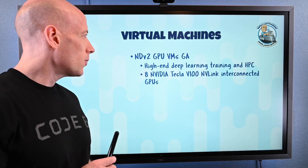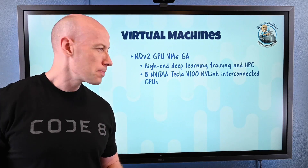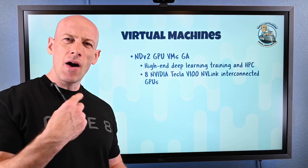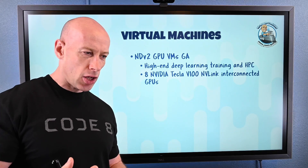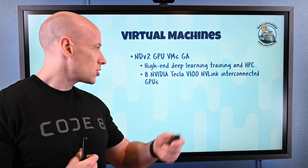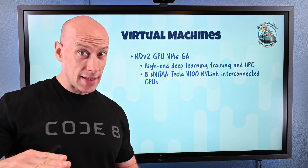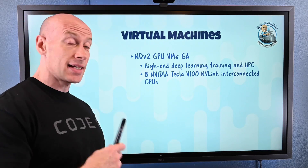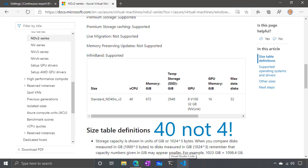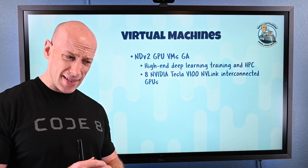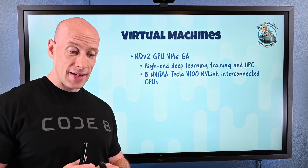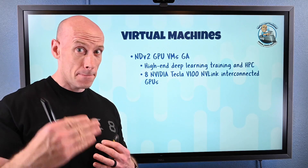For Virtual Machines, we have two new SKUs available. The NDV2 GPU VMs are very high-end Virtual Machines for deep learning training and high-performance compute. These only come in one size today: eight NVIDIA Tesla V100 NVLink interconnected GPUs, 40 non-hyper-threaded Xeon Platinum 8168 processor cores, 672 gigabytes of RAM, and 100 gigabit EDR InfiniBand networking. Big boys.